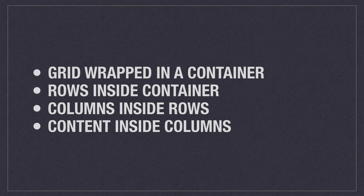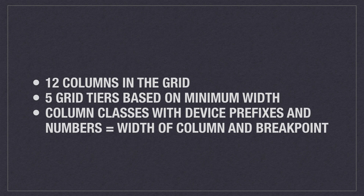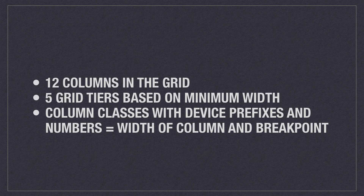The grid is wrapped in a container which we just learned about in the previous lecture. Inside this we have rows which are made up of horizontal groups of columns. Content is placed inside columns and only columns may be immediate children of rows. There are twelve columns available in the grid, meaning that the width of a column can be equal to one or more of these twelve columns. The five grid tiers are based on minimum widths, meaning that they apply to the specified device size and all larger sizes. Column classes with numbers and device prefixes indicate the width of the column and on what breakpoint to apply it. These features will be much easier to understand during the following examples.